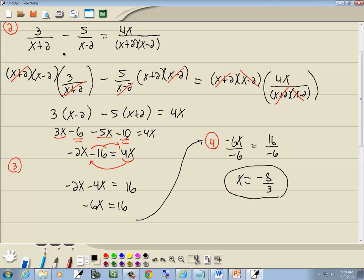Now I say it's negative 8 thirds. There's no way that's going to cause a 0 in my original problem. If I put that in for x, negative 8 thirds plus 2, I don't know what it is, but it's not 0. Negative 8 thirds minus 2, I don't know what that is, but it's not 0. And same with this over here. The values that cause a problem is if I come up with an x equals negative 2, negative 2 plus 2 would give us a 0. Or positive 2, 2 minus 2 would give us a 0. But this answer is fine.